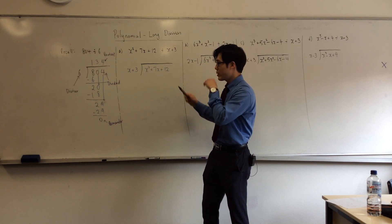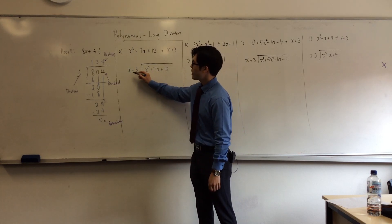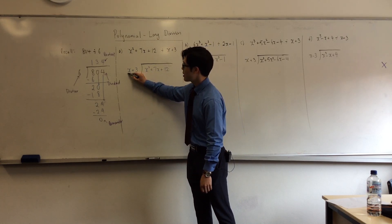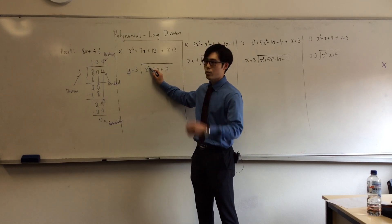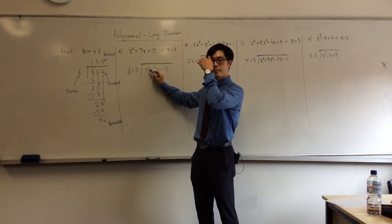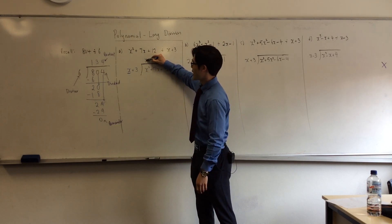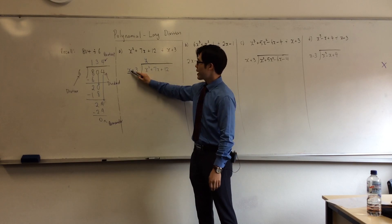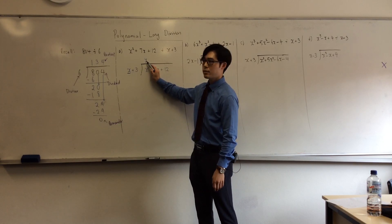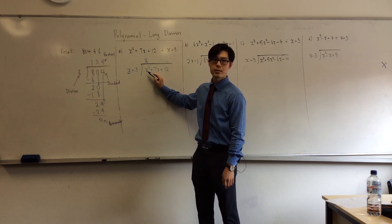Let's do the math. When it comes to this, the question you ask yourself is: how many x's go into x squared? Just one x, because x times x is x squared. Does that make sense so far?